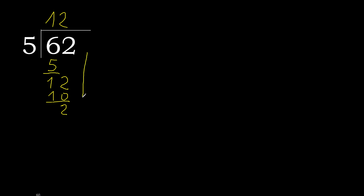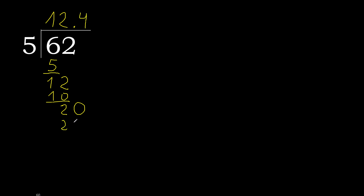Next, that is not a whole number, therefore always complete with 0 here, with a decimal point. 0 point. 20: 5 multiplied by 4 is 20. 20 minus 20 is 0.